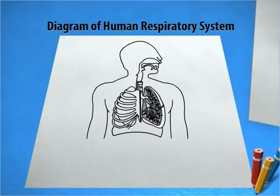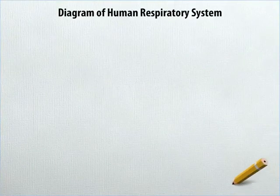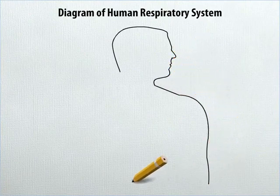Diagram of Human Respiratory System. Learn to draw the diagram of the human respiratory system. At the center of the sheet, draw an outline of the human body up to the abdomen.